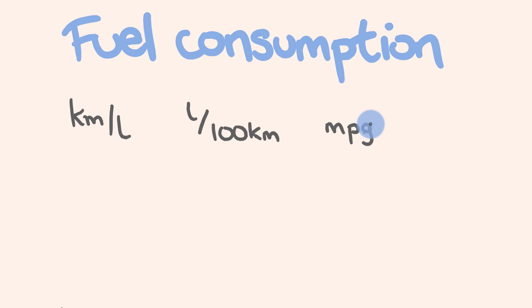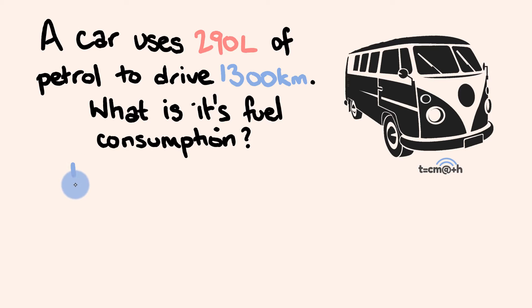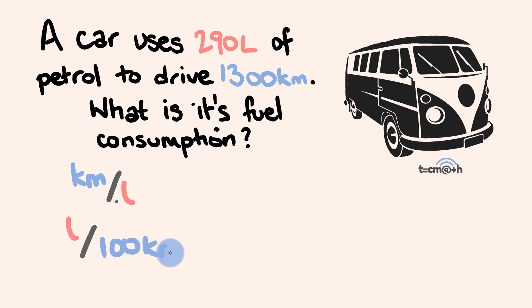Let's launch into the first question. A car uses 290 litres of petrol to drive 1,300 kilometres. What is its fuel consumption? There are two different ways that we could measure fuel consumption using these particular figures. The first way is: what is the number of kilometres we travel per litre — the kilometres per litre. The other thing we could do is say how many litres are we using per 100 kilometres. We're going to work out both of these, and we're just going to treat each of our units as a formula.